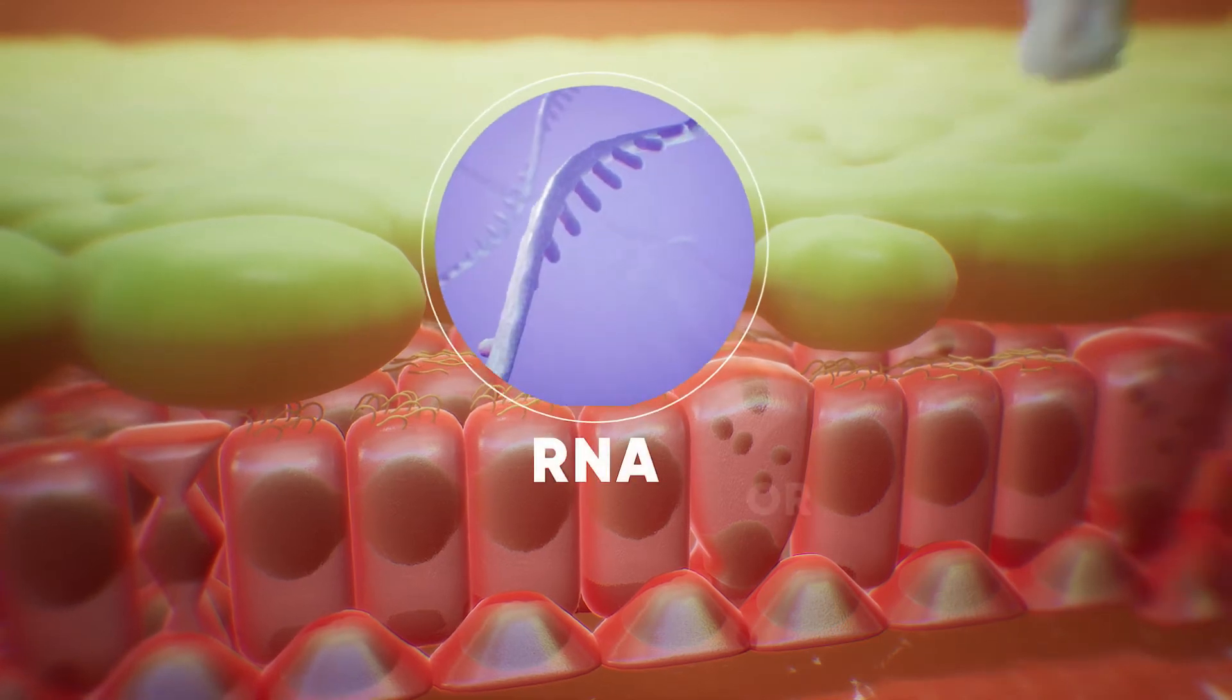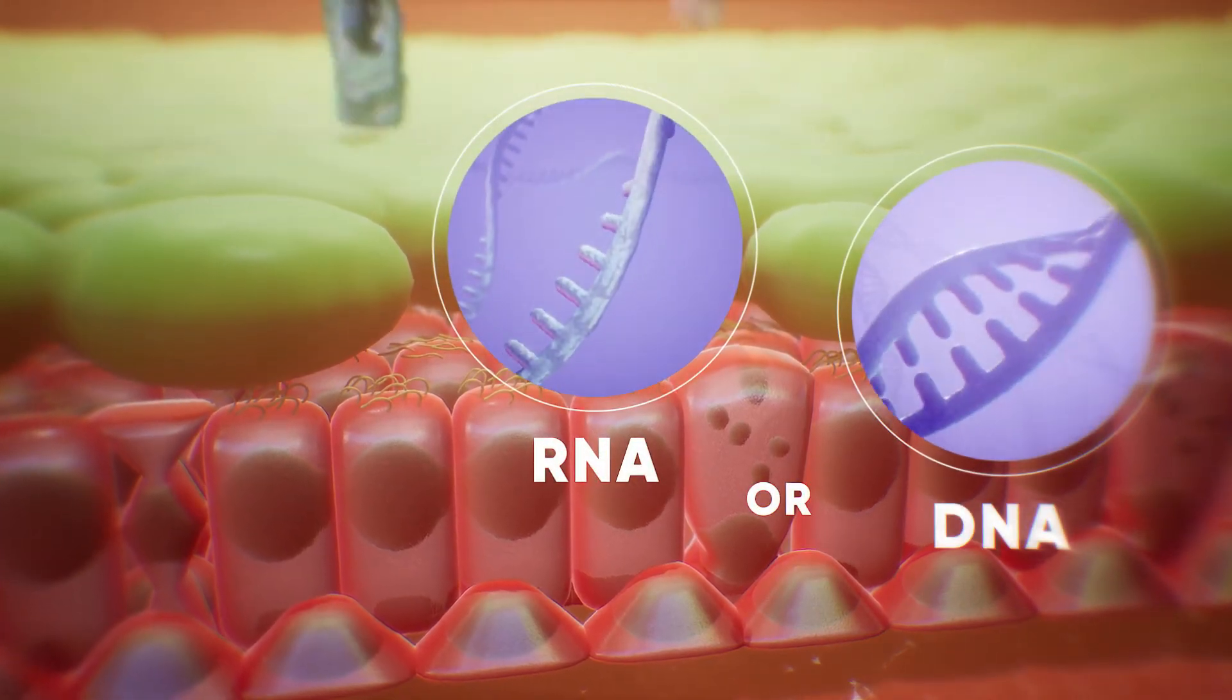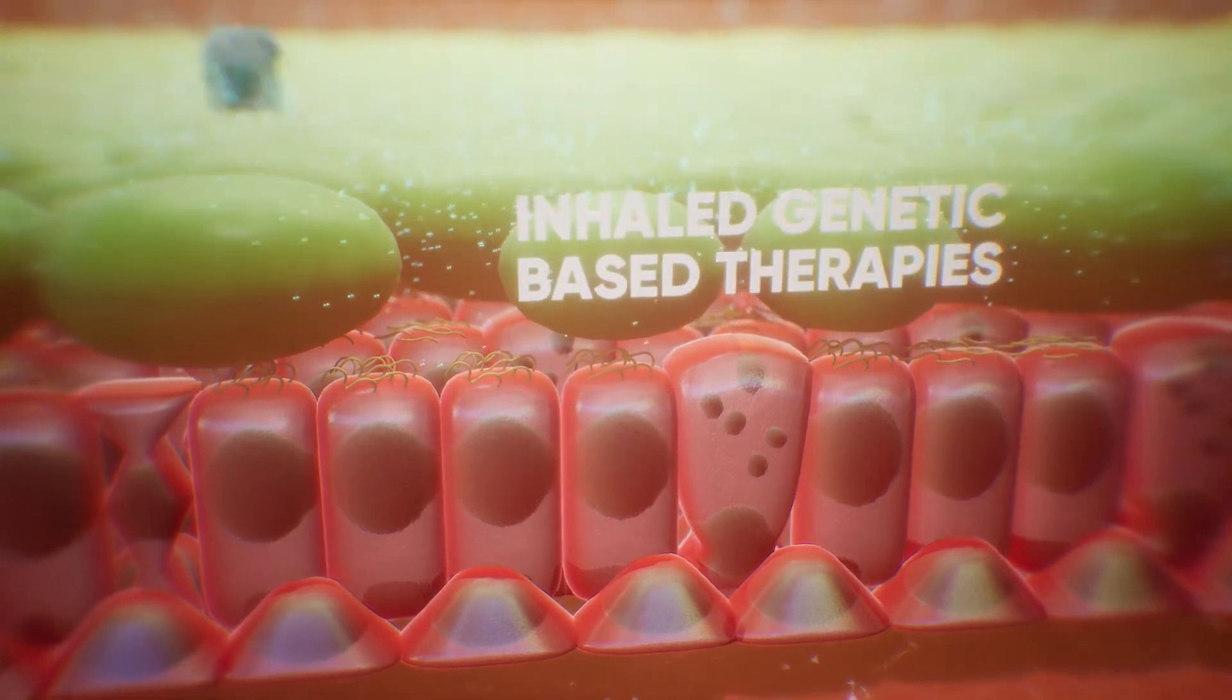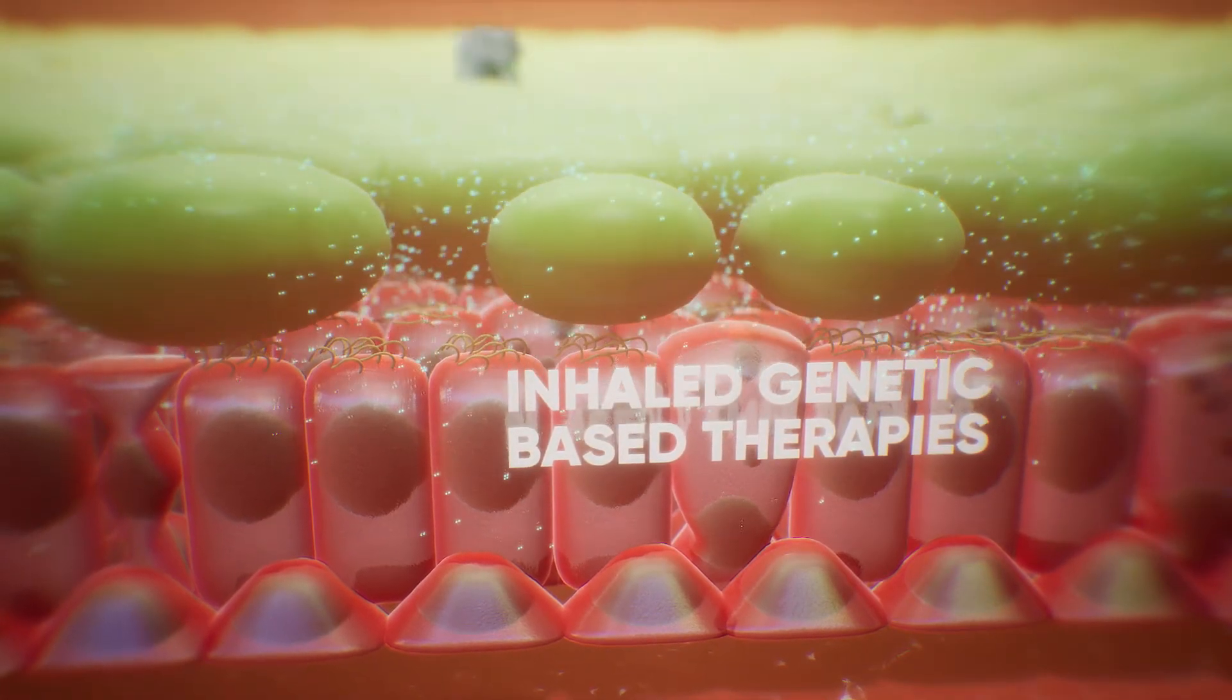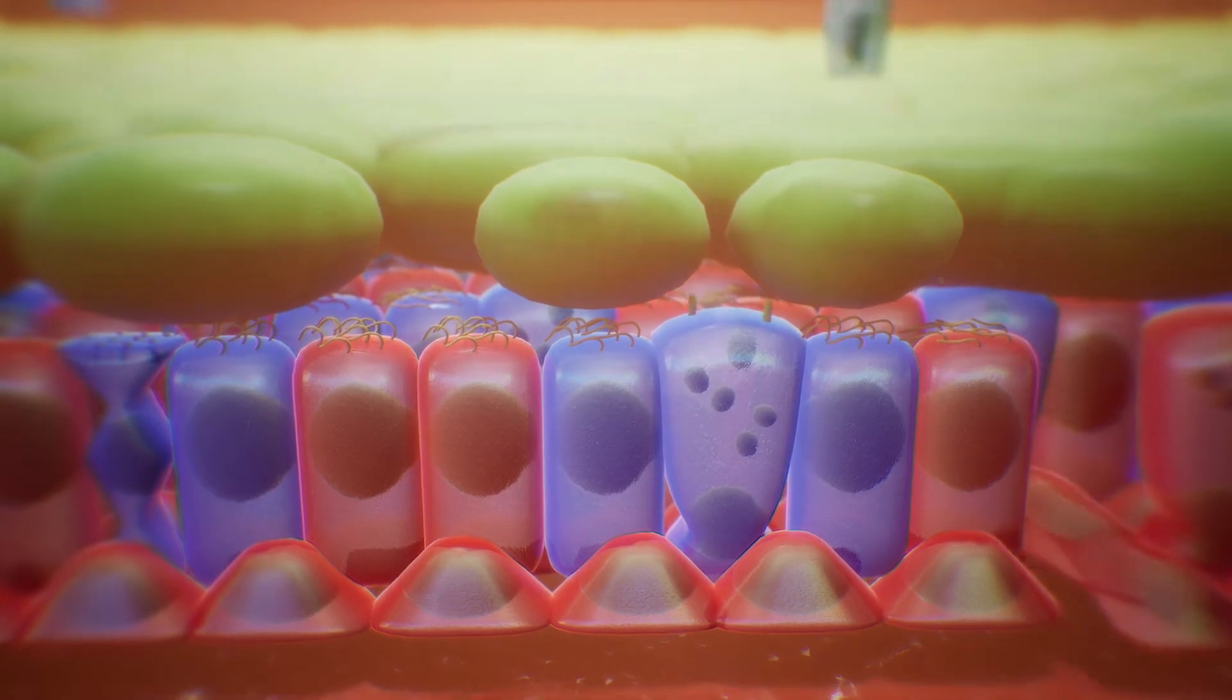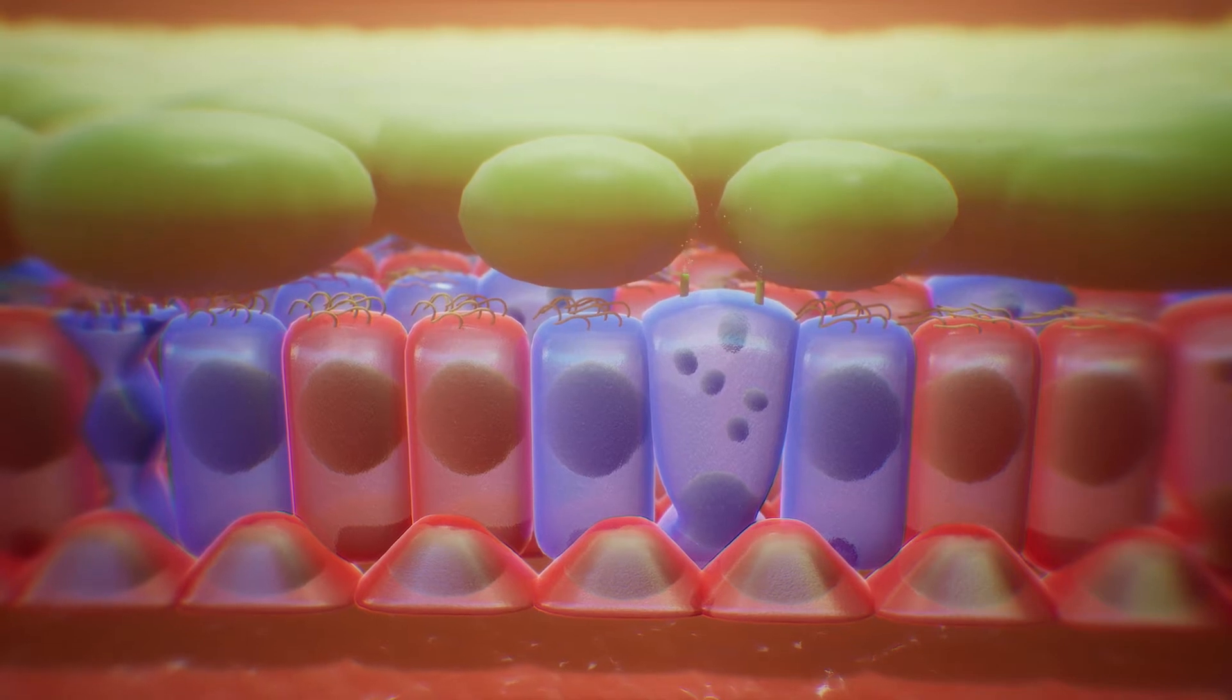Two potential treatments are RNA therapy and gene therapy. Both approaches can deliver a correct copy of the genetic instructions to cells in the lungs. With the correct messenger RNA or DNA sequence, cells would be able to produce normal CFTR protein that moves to the cell surface. There, it can adjust the amount of salt and fluids flowing through the cell membrane.